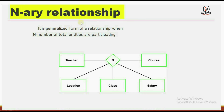N-ary relationship is the generalized form of a relationship when n number of total entities are participating. For example, R is a relationship in which many entities participate — teacher, location, class, salary, course, etc. We can have any number of entities participating in such a relationship.